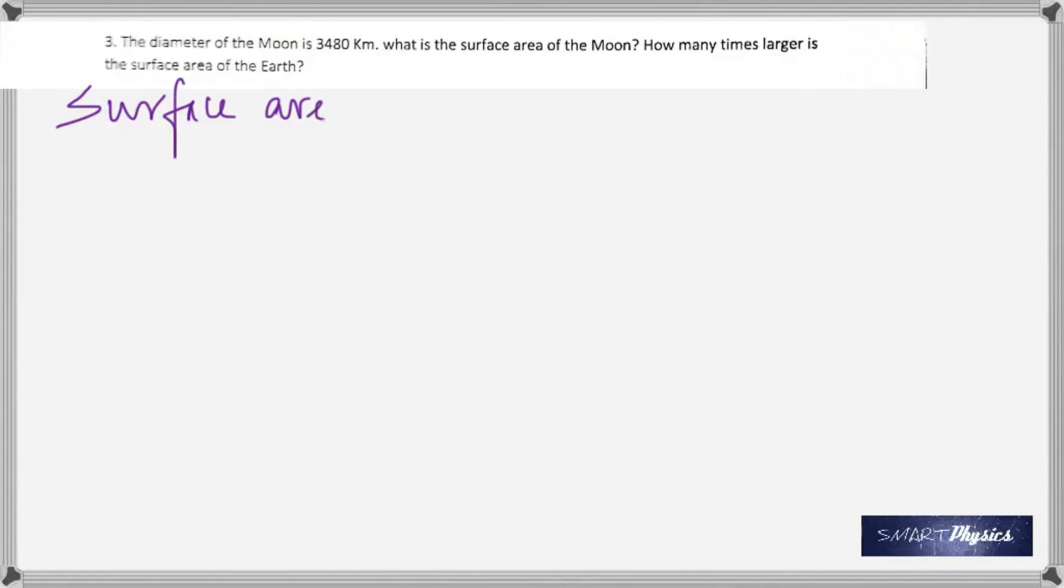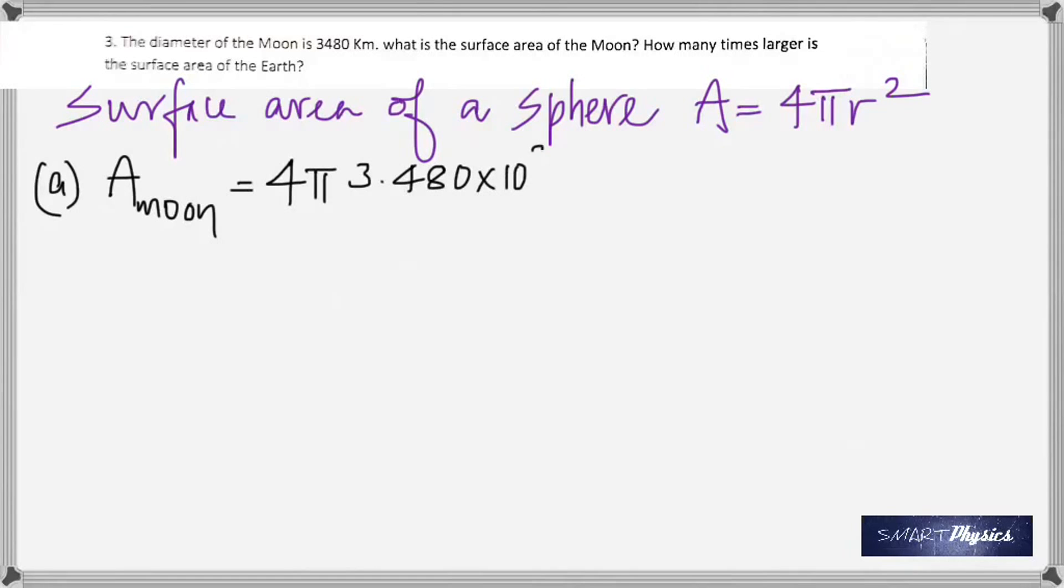Bringing us to the third question that says, the diameter of the moon is 3480 kilometers. What's the surface area of the moon? How many times larger is this compared to the surface area of the Earth? Now, the surface area of a sphere is 4 π r squared. And there are many times that you're going to use this formula for surface area of a sphere. That gives the surface area as 4 π times the radius in meters, 3.480 times 10 to the 3 by 2, because what was given was the diameter.